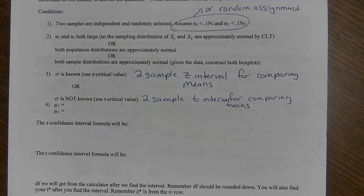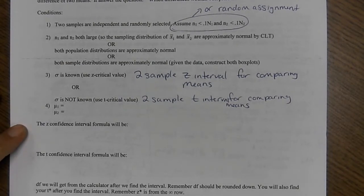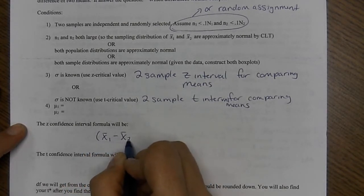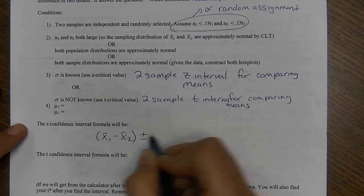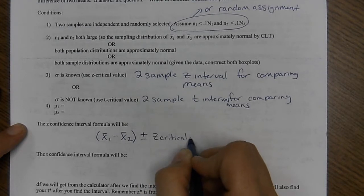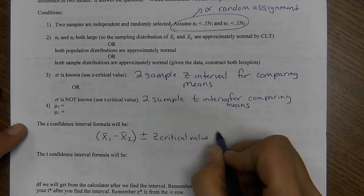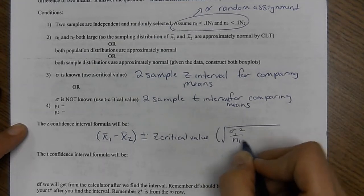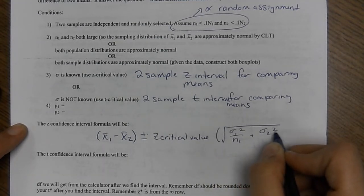So the formula is similar to yesterday. So if it's a Z confidence interval, X bar one minus X bar two, plus or minus our Z critical value, times sigma one squared over N one, sigma two squared over N two.